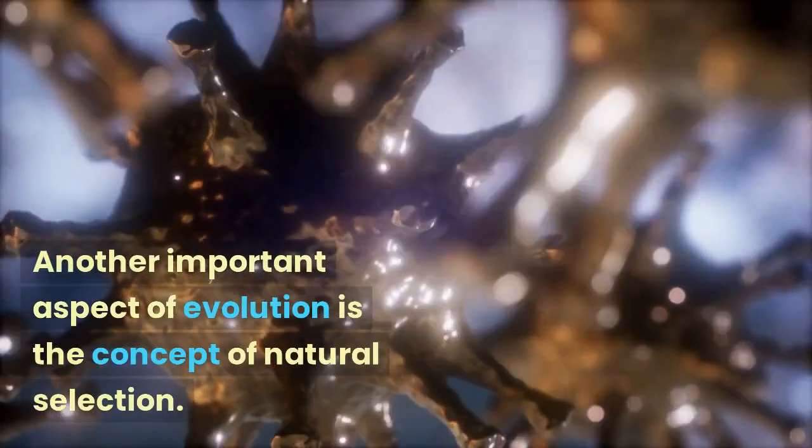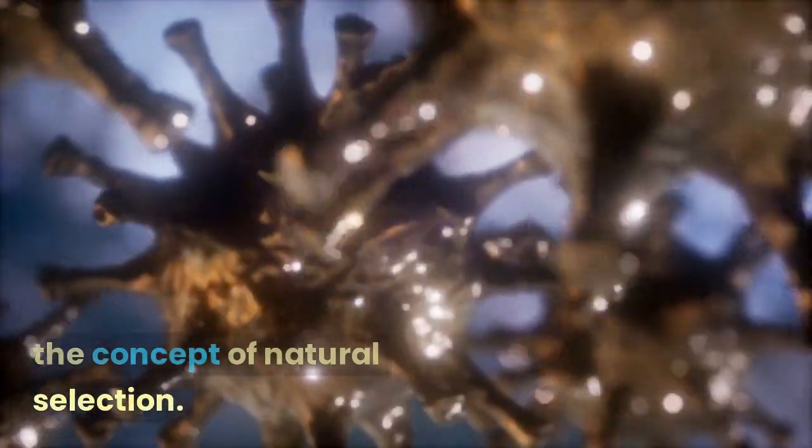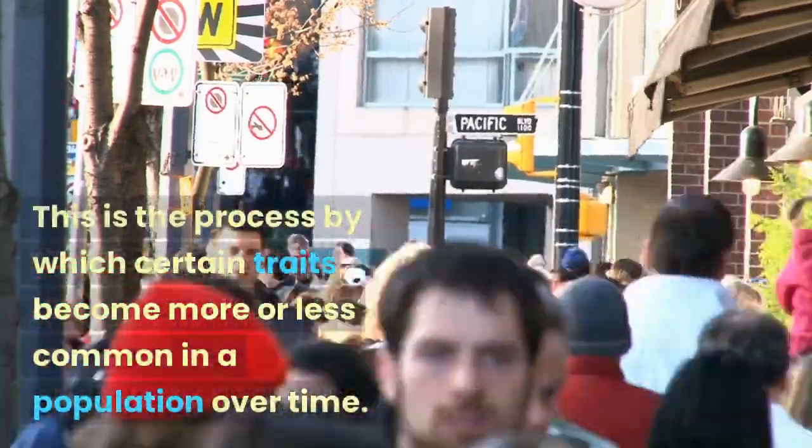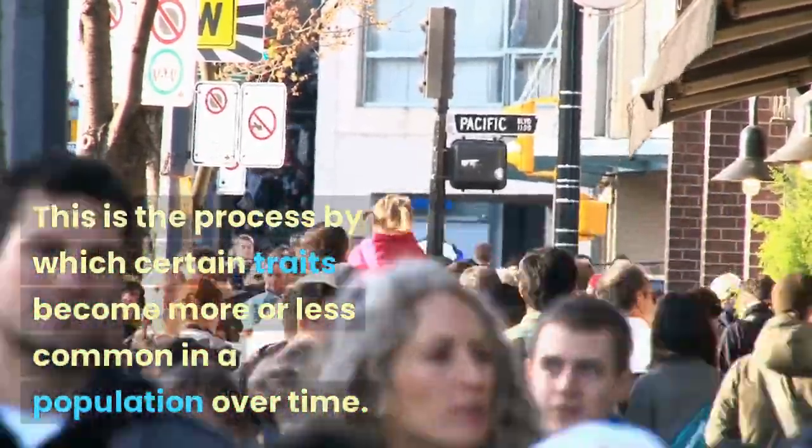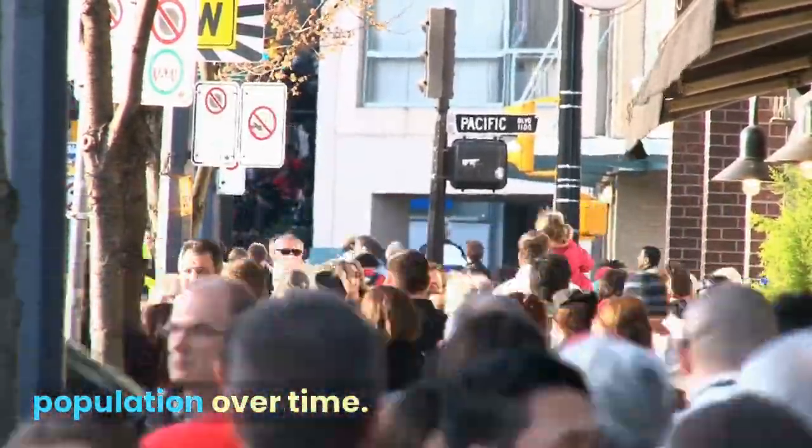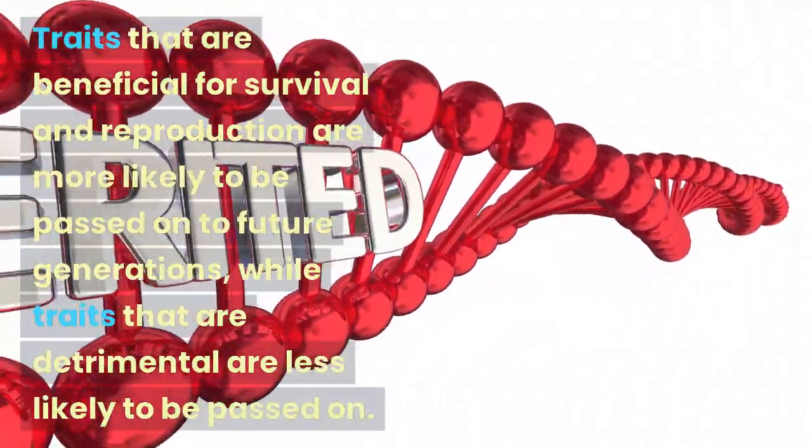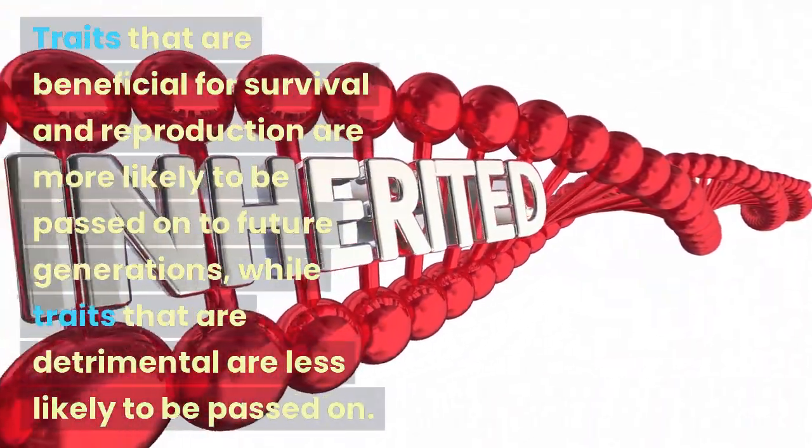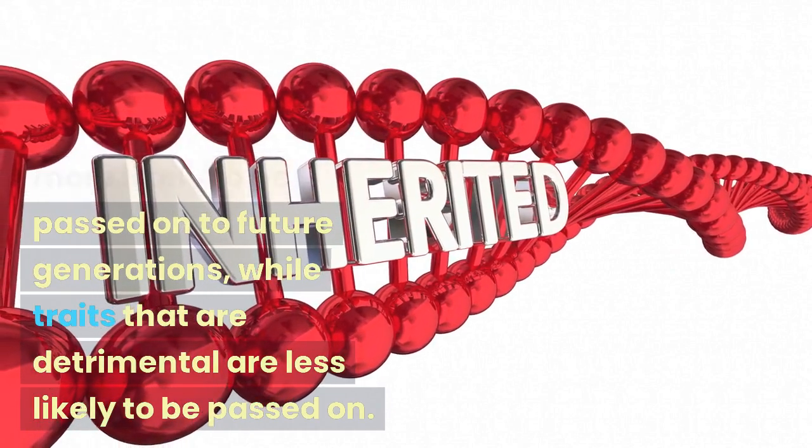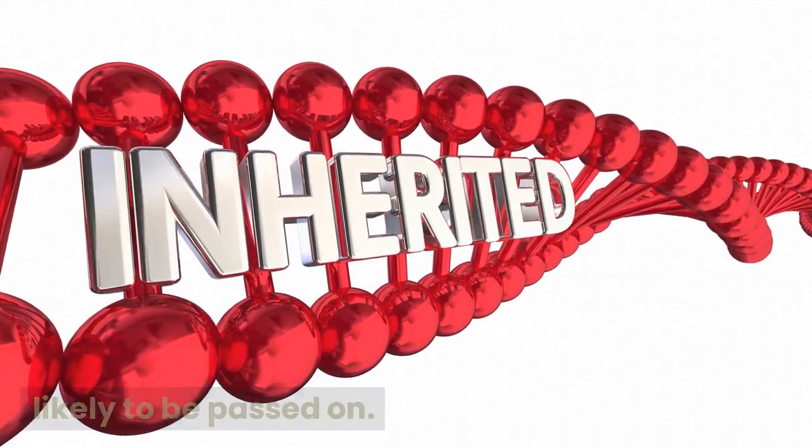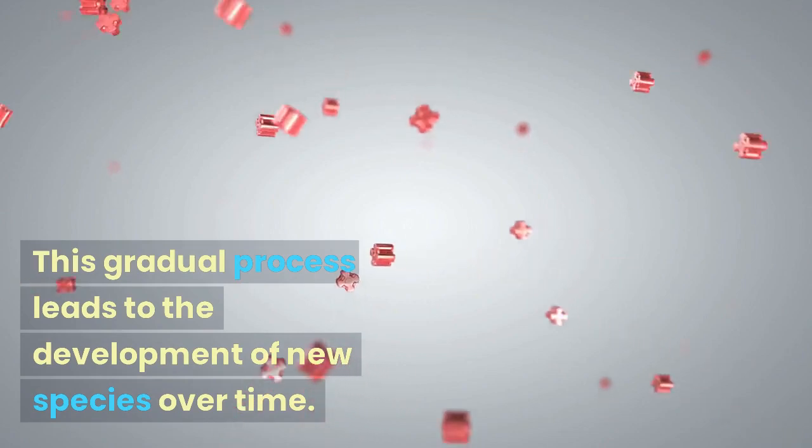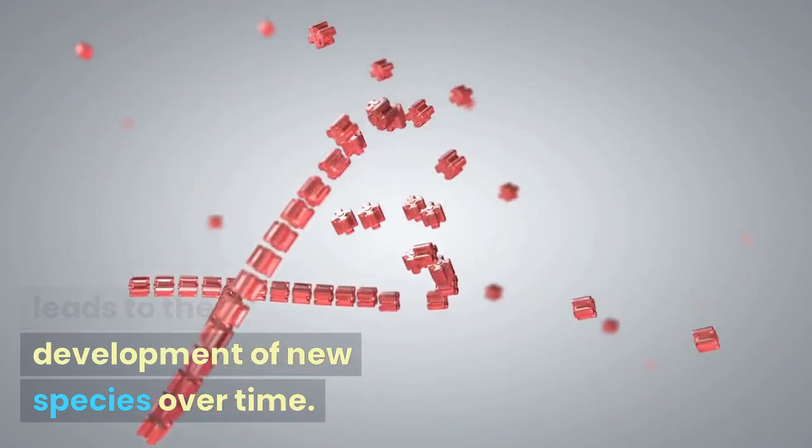Another important aspect of evolution is the concept of natural selection. This is the process by which certain traits become more or less common in a population over time. Traits that are beneficial for survival and reproduction are more likely to be passed on to future generations, while traits that are detrimental are less likely to be passed on. This gradual process leads to the development of new species over time.